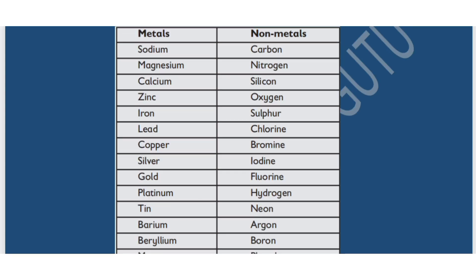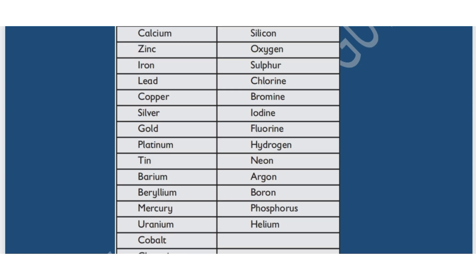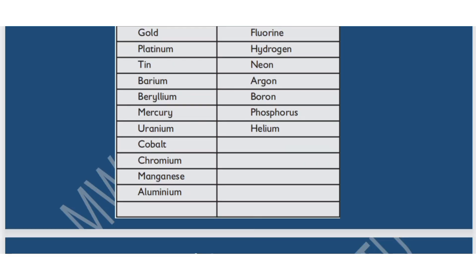For non-metals, we have carbon, nitrogen, silicon, oxygen, sulfur, chlorine, bromine, iodine, fluorine, hydrogen, neon, argon, boron, phosphorus, and helium. Those are some examples of non-metals. So elements are further classified into metals and non-metals.